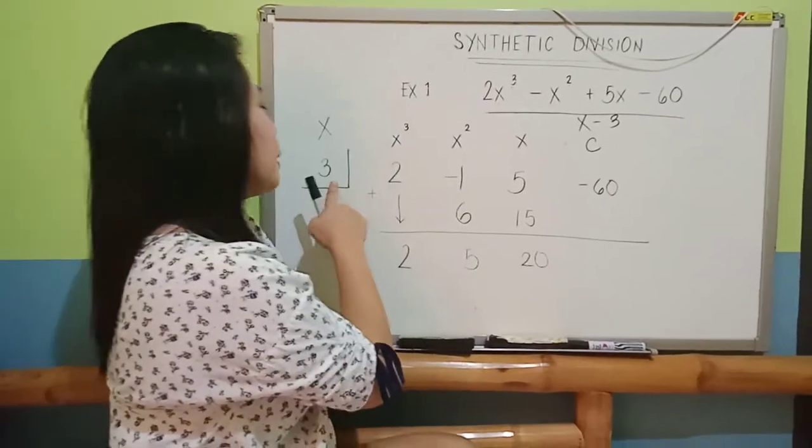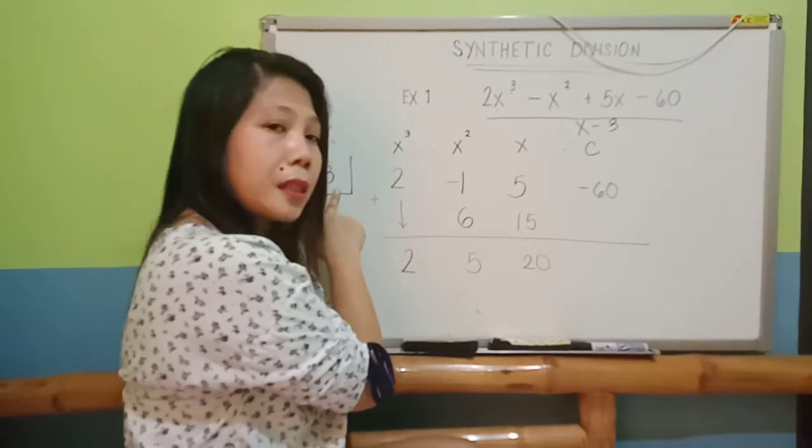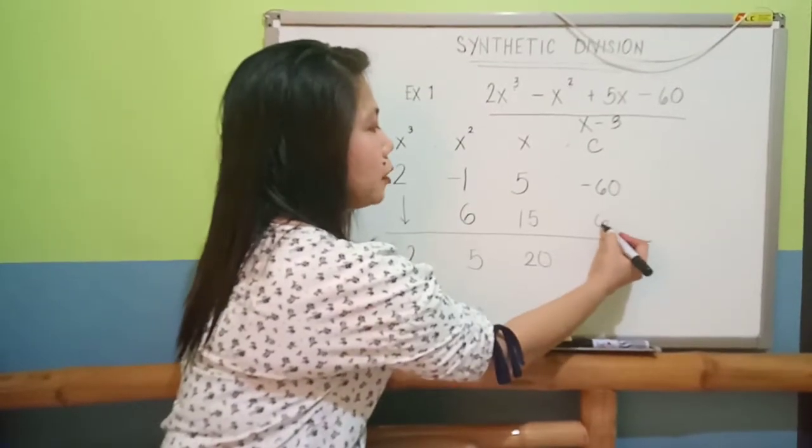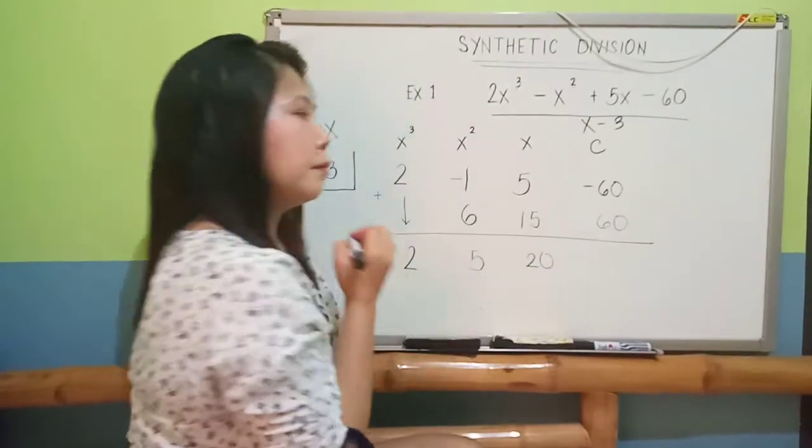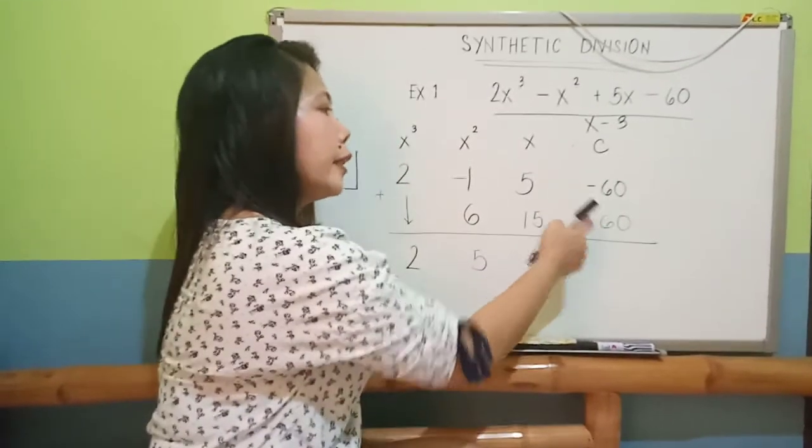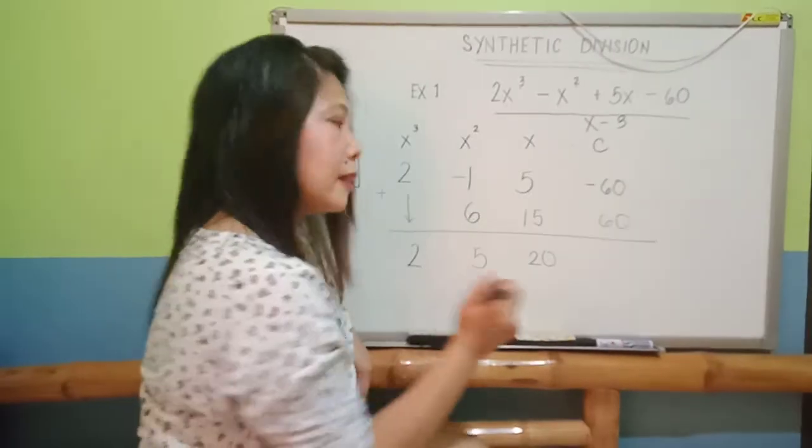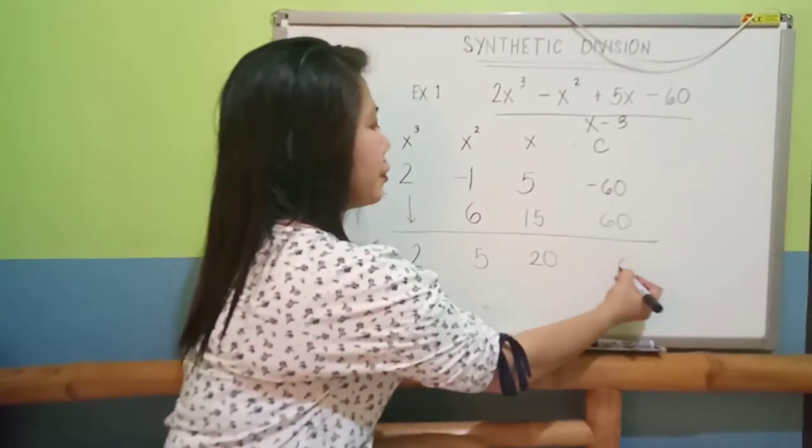Positive 20, again, multiplied to 3, that will be positive 60. You're going to place it under negative 60. And then, you add. Negative 60 plus 60 is equal to 0.